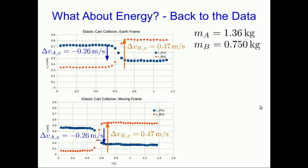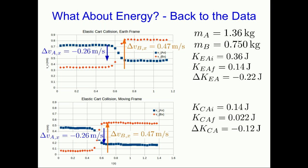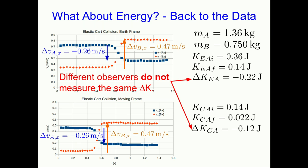Does this also work for energy? Let's go back to the data and see. If all observers also measure the same change in kinetic energy, that would be awfully convenient. You can verify, just reading the velocities off of the graph, that these are roughly the kinetic energies as measured from the Earth frame for cart A, and so there is the change in kinetic energy for cart A. Again, you can verify reading values off the graphs that those are the kinetic energies as measured from frame C, from the moving cart. And wait — those don't match. So apparently different observers do not measure the same change in kinetic energy for an object.